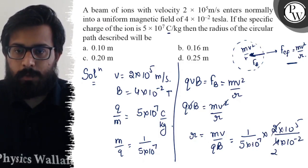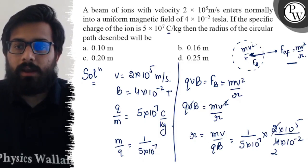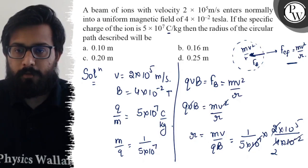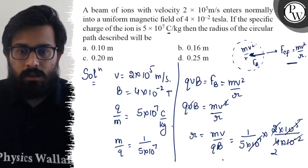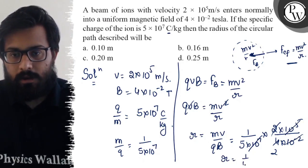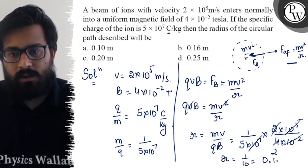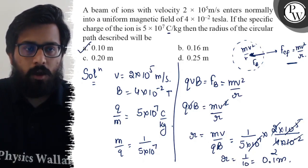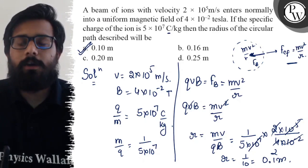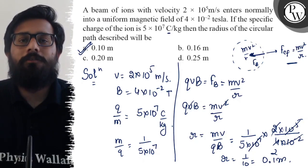So 2 and 4 cancel out. 10⁷⁻² becomes 10⁵, which cancels with 10⁵. So the value of r comes out to be 1/10, which can be written as 0.1 meter. So 0.1 meter in option A, and hence your option number A is absolutely correct. So I hope you got the concept of this question. All the very best.